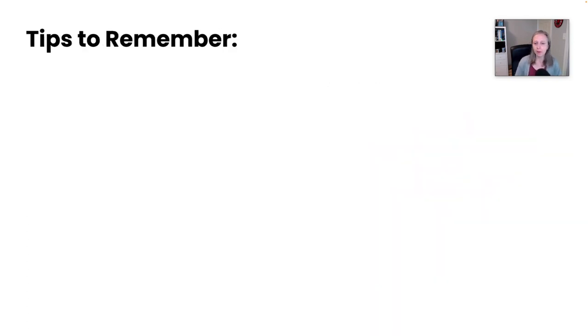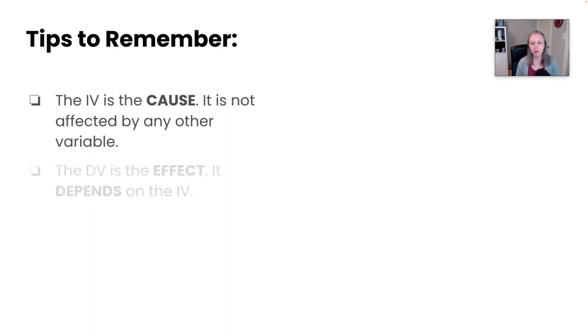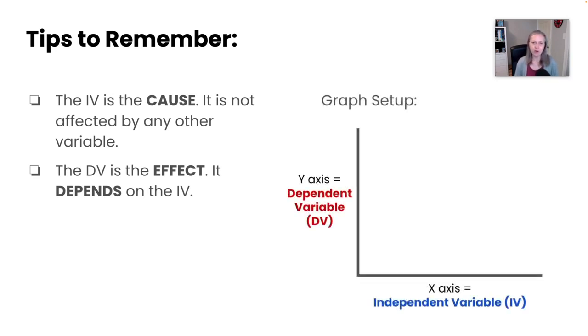Now, there are a few tips to remember when it comes to independent and dependent variables. First, the independent variable, or IV, is the cause. It's not affected by any other variable. Whereas the dependent variable, or DV, is the effect. It depends on the IV. When we get into graphing our results, it's important to note that the independent variable is always graphed on the x-axis, and the dependent variable is always graphed on the y-axis. So that's just something to keep in mind as we move forward.